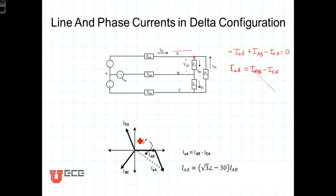And we have here I sub AB, that's this current right there, minus I sub CA. Well, I sub CA is that current, minus means to flip it 180 degrees and then tip to tail it. So here's I sub AB plus the opposite of I sub CA, and the resultant vector or the resultant phasor is the line current I sub little a big A.